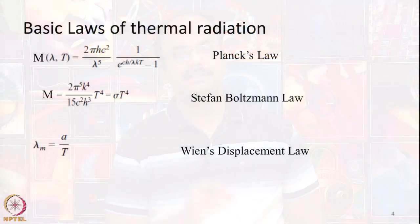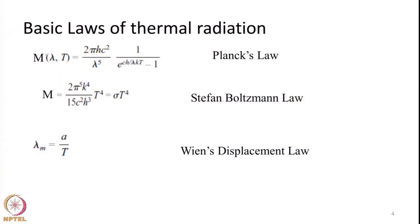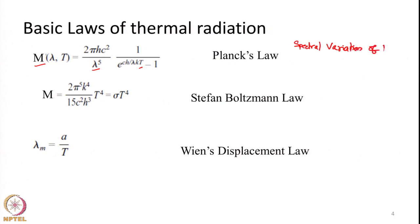Those three basic laws are Planck's law, the Stefan-Boltzmann law, and Wien's displacement law. Planck's law tells us that if an object is at a given temperature T, it will emit a certain amount of radiation at a particular wavelength. That is, Planck's law gives us the spectral variation of the radiation emitted by an object.